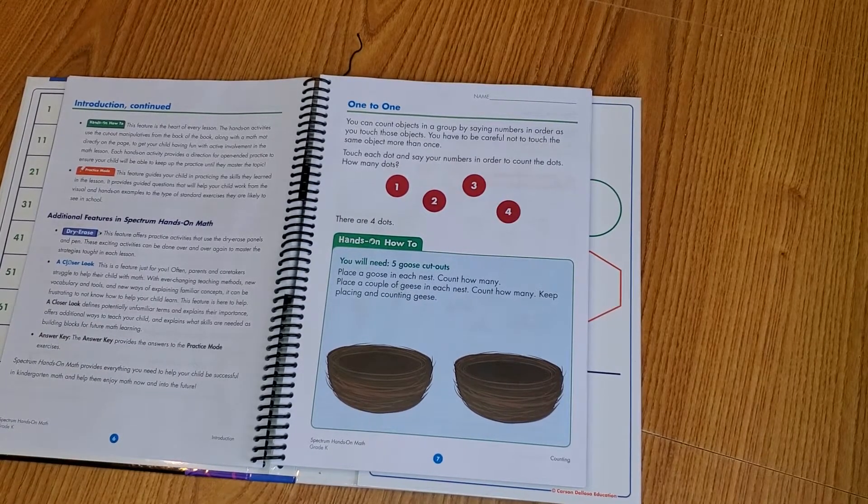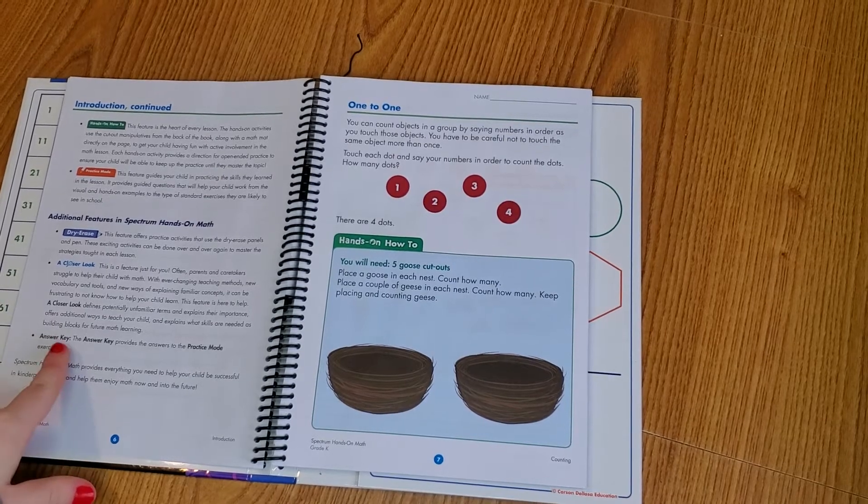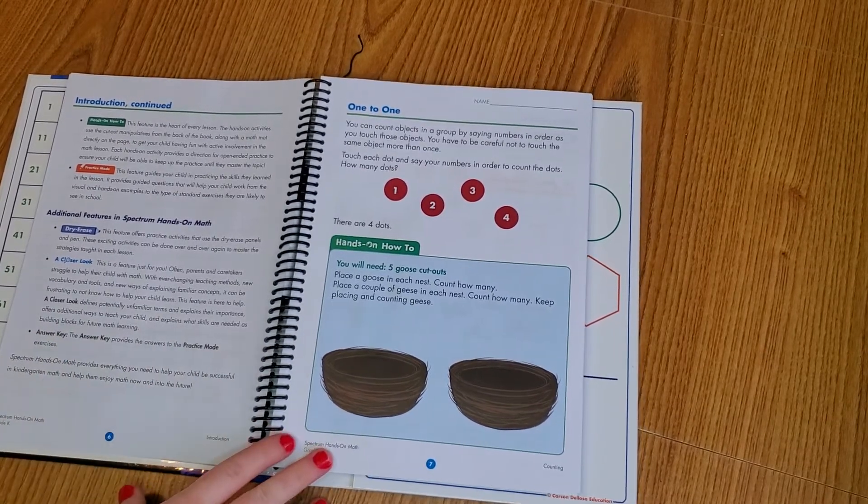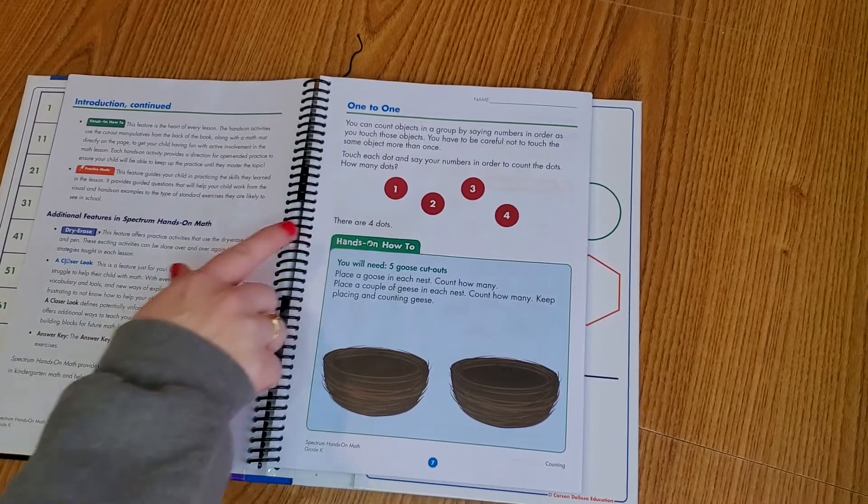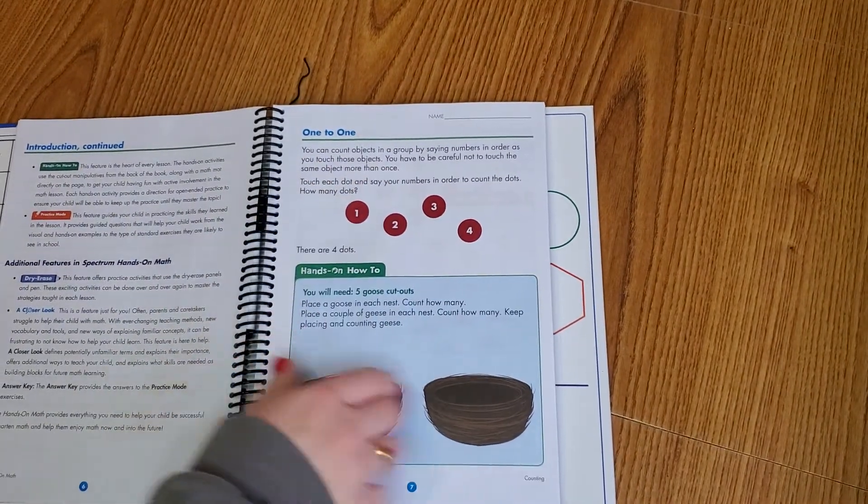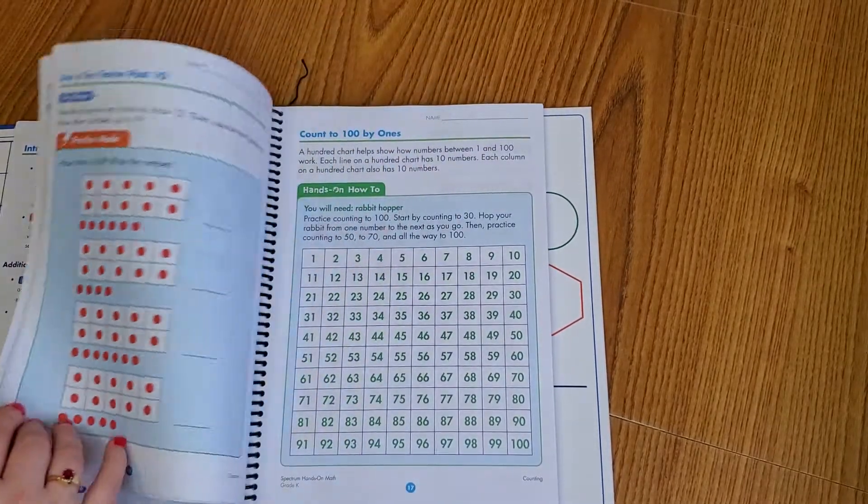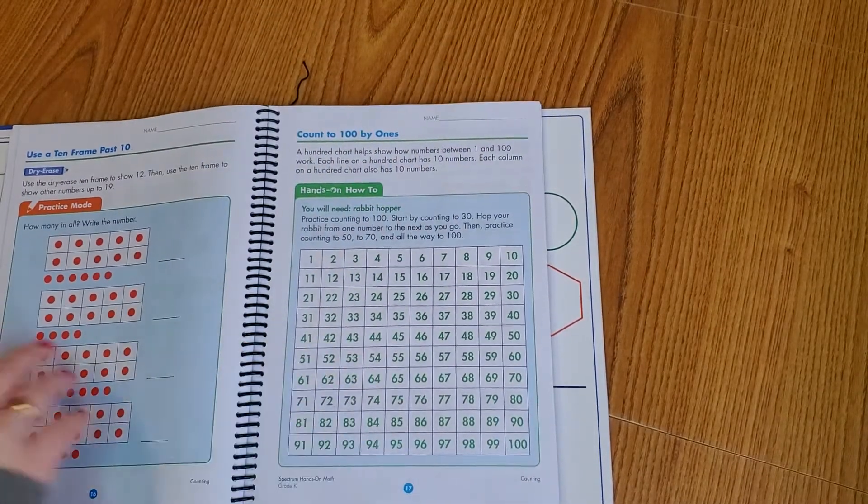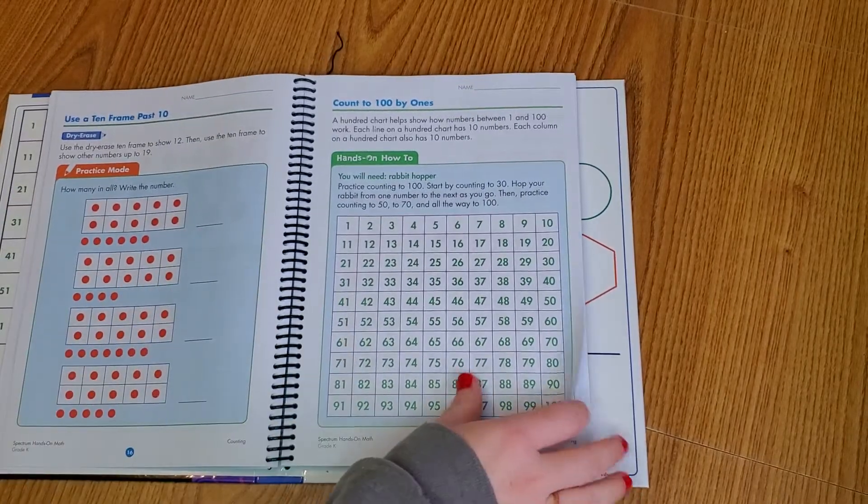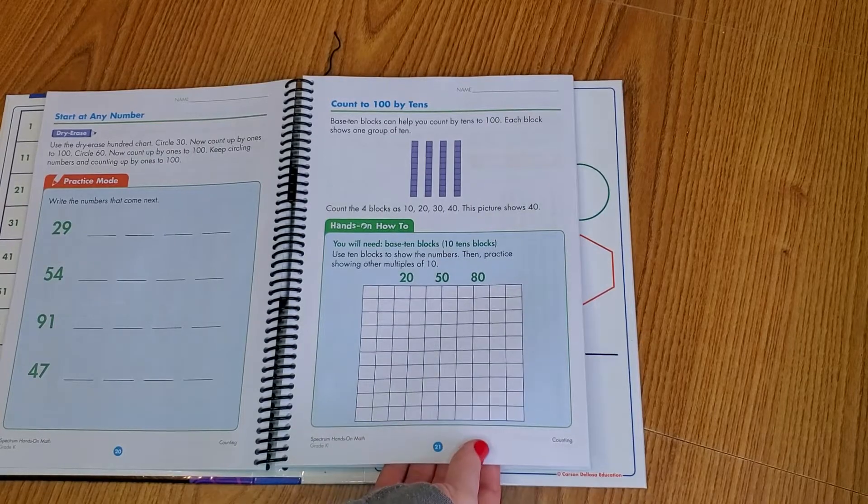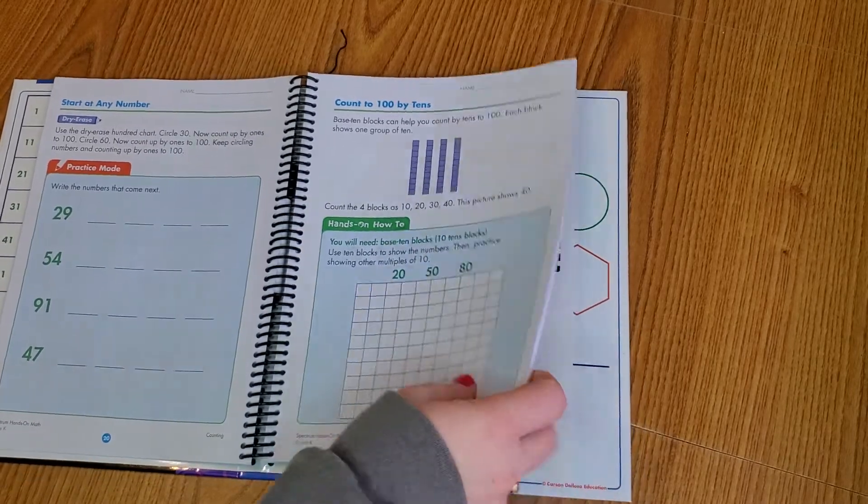Hang on one minute, Ashton. I'm sorry, I can't really film without the kids in the background. That's never going to happen. There's one-to-one, hands-on how-tos. I'm not going to go through the whole book. There's different types of lessons in here, and it tells you what manipulatives you need that are in the back.